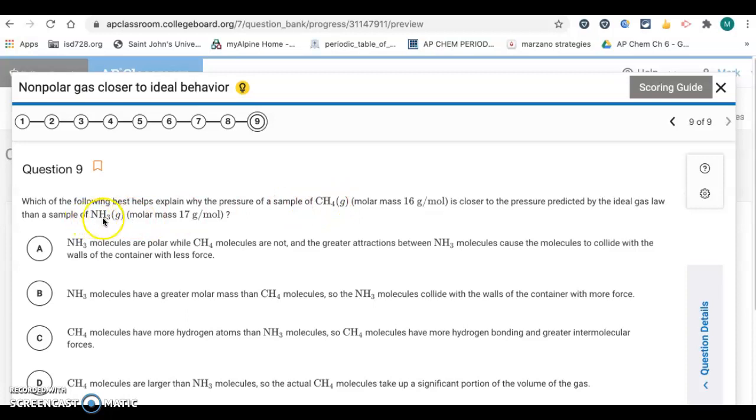Now, CH4 is non-polar, so it's only going to have weak London dispersion forces as their intermolecular forces. But NH3 has hydrogen bonding. So it's a polar molecule and it has hydrogen bonded to nitrogen, so it has hydrogen bonding. So it has much stronger interactions. So, let's see, letter A, NH3 molecules are polar while CH4 molecules are not. Then it has greater attractions between NH3, cause the molecules to collide with the walls of the container with less force. So that's going to be the correct answer right there.